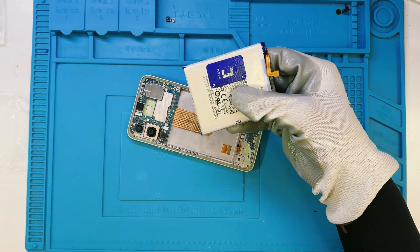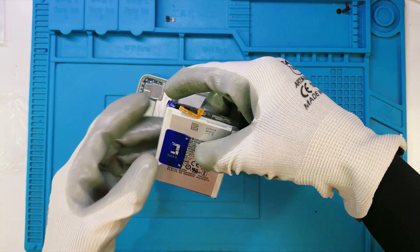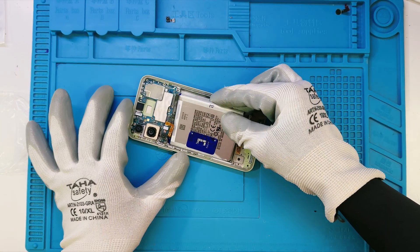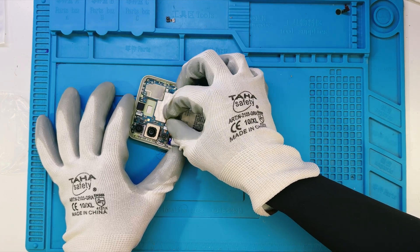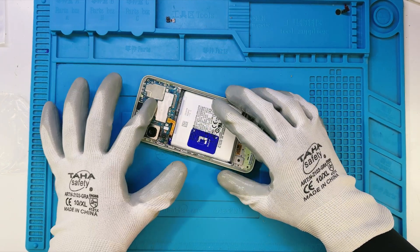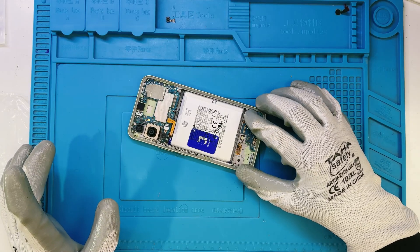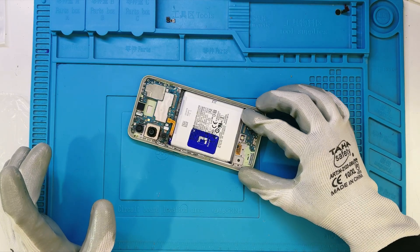I'm fixing the battery into the frame. This part is simple but very important. Make sure it sits properly in its slot, lines up with the connectors, and stays secure. A loose battery can cause serious problems later, so I'm pressing it gently but firmly into place.